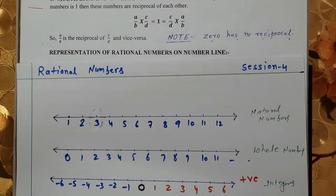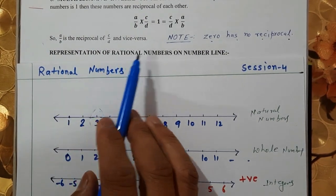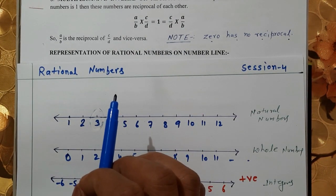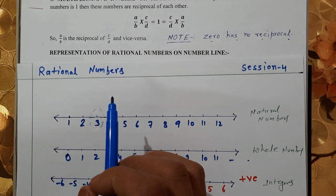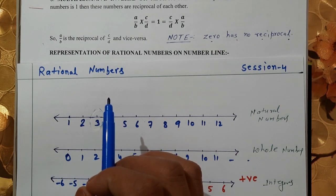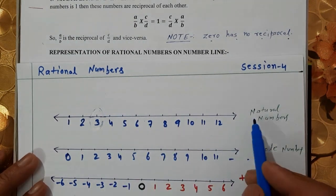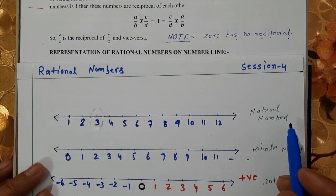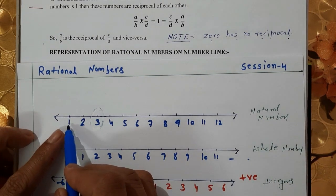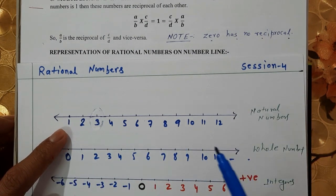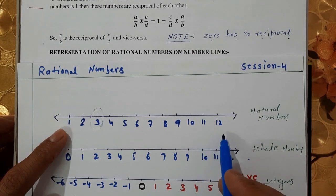Our first topic is representation of rational numbers on the number line. In the earlier classes, we learned to represent natural numbers, whole numbers, and integers on the number line. Let's revise natural numbers. Natural numbers start from 1, so the number line goes 1, 2, 3, 4, 5, 6, 7, 8, 9, 10 and so on. The line extends indefinitely only to the right side of 1.